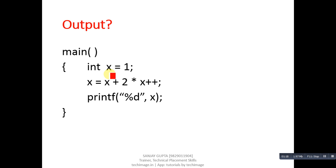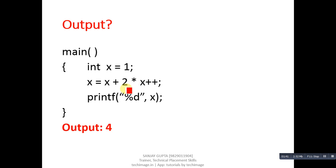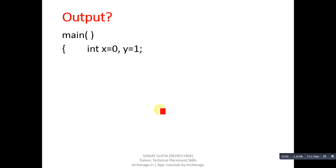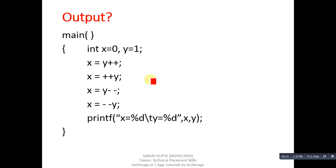This is the next code segment. X is initialized with 1, then an expression, then printf. The output is 4. The post-increment (X++) is performed after completion of the expression. As per operator precedence, multiplication is performed first: 2 into X (which is 1) equals 2. Then 2 is added to X (which is 1), giving 3, which is assigned into X. After the expression completes, X++ is applied, so X becomes 4, which printf prints.